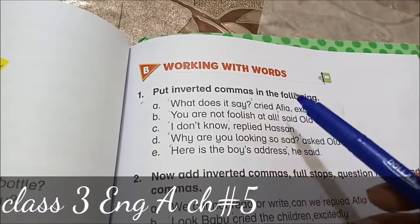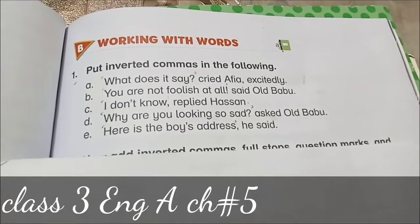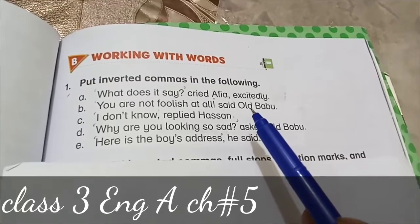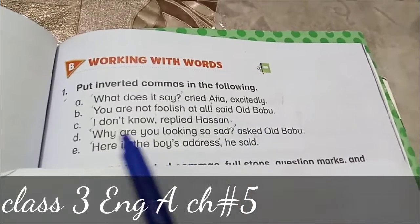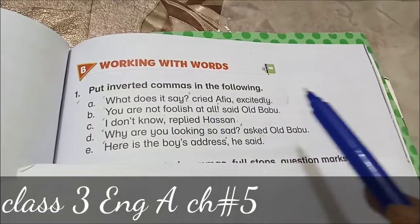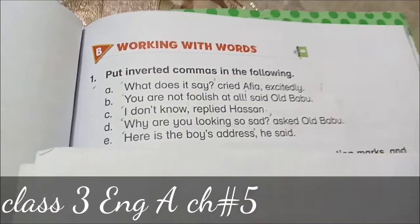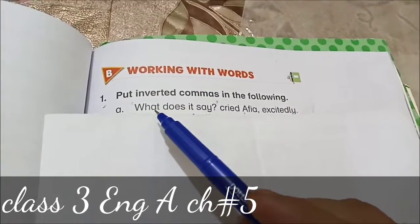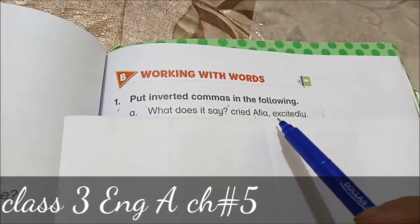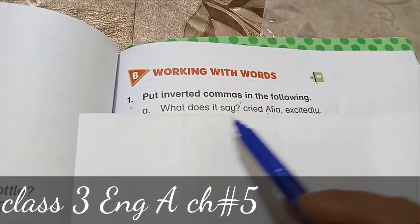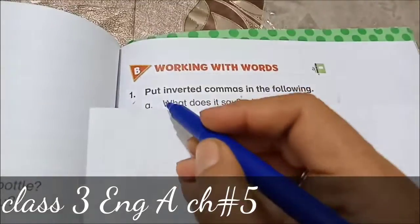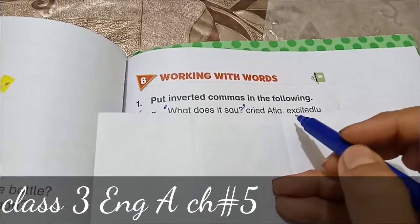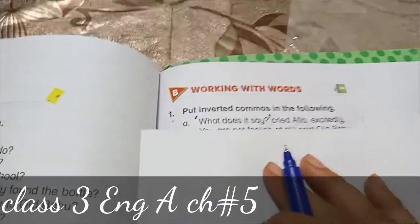The first statement of this question is: put inverted commas in the following. I would like to tell you that where you have to put commas — when you are going to describe the actual statement of any person, what that person is saying, we have to enclose that statement in inverted commas. So whatever anybody is saying, we will write that statement in inverted commas. Now look here, part A: 'What does it say?' cried Afia excitedly. Afia is saying 'What does it say?' so we have to put inverted commas before and after this statement, and at the end there is a full stop.